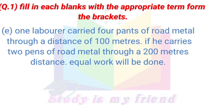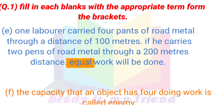E. One laborer carried four pans of road metal through a distance of 100 meters. If he carries two pans of road metal through a 200 meters distance, equal work will be done. F. The capacity that an object has for doing work is called energy.